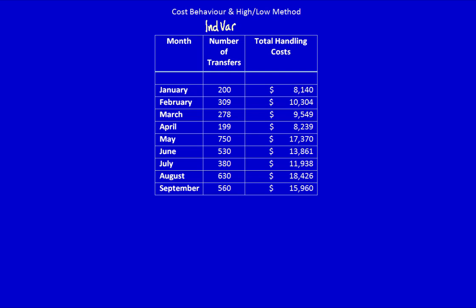We can see that the very highest amount is in May, 750. The very lowest amount happens to be April, 199. Note that the high and low points are always chosen using the cost driver, the independent variable.